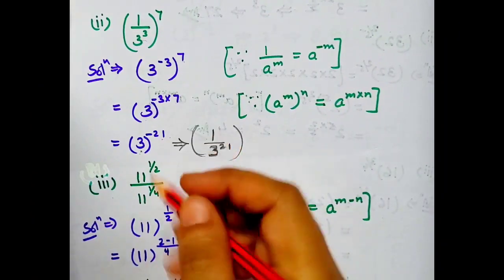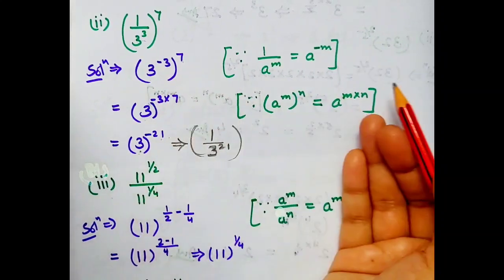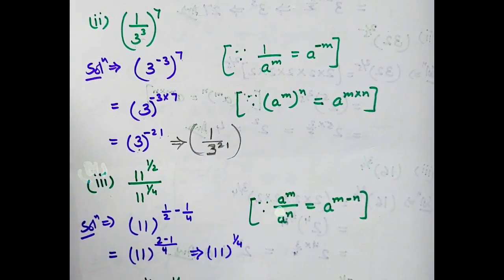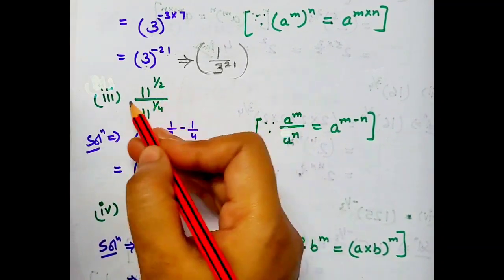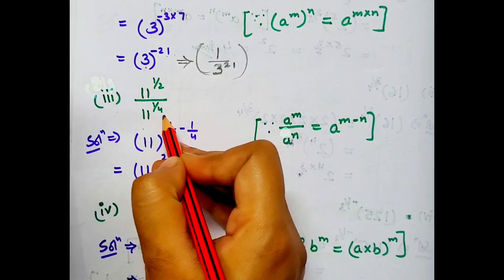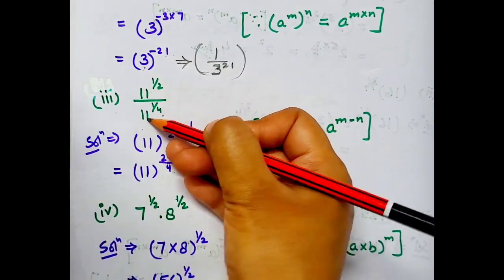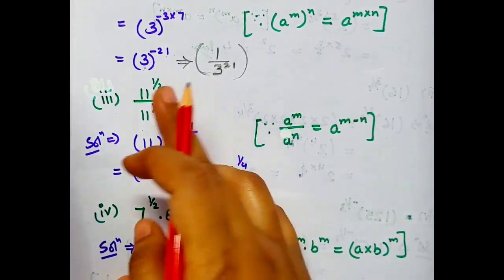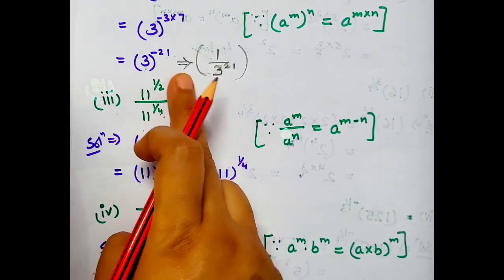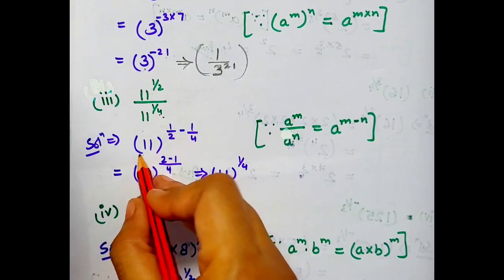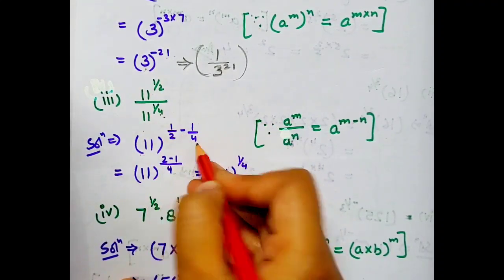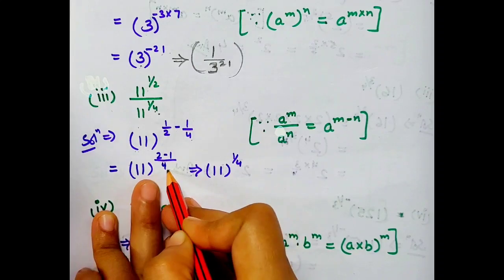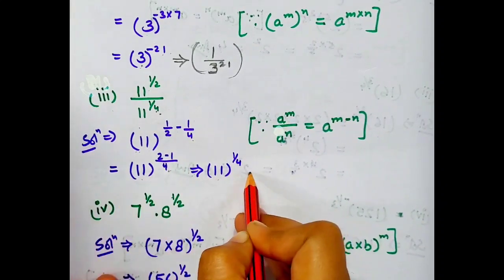In questions ko solve karte time, jo bhi law use hota hai question mein, usko saath mein mention karna zaroori hota hai. Next part: 11 to the power 1 by 2 divided by 11 to the power 1 by 4. Yahan pe base same hai, powers different hain, aur division ho raha hai. Base as it is copy ho jayega aur powers minus ho jayengi: 11 to the power 1 by 2 minus 1 by 4. LCM lekar solve karenge, answer 11 to the power 1 by 4.